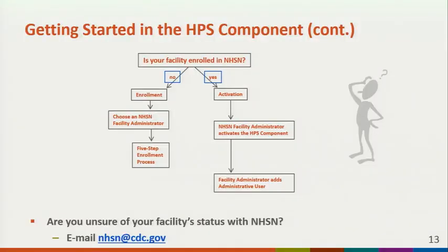If your facility is not enrolled in NHSN, you must designate an individual to be your NHSN facility administrator and complete the five-step enrollment process. If your facility is already enrolled, contact your facility administrator to activate the component. The facility administrator will then add users. If you are unsure of your facility's status within NHSN, please email nhsn@cdc.gov for more information.